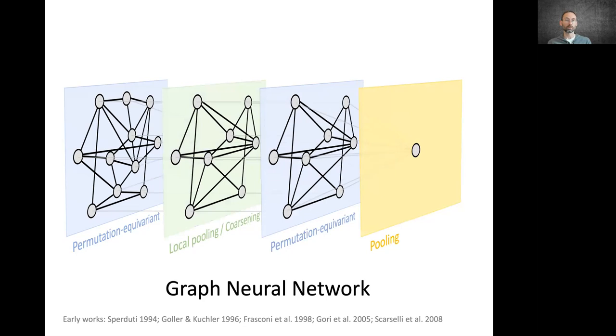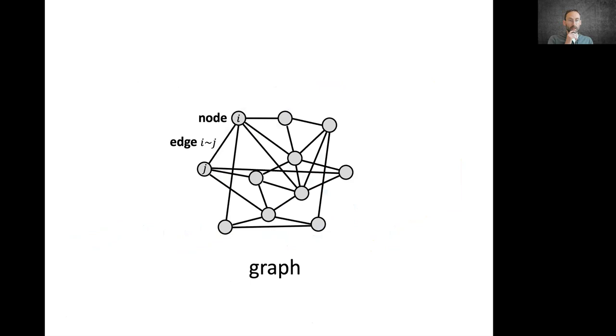and an optional global pooling layer that produces a single graph-wise output. Some architectures also include local pooling layers obtained by some form of graph coarsening that can also be made learnable.